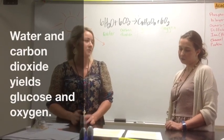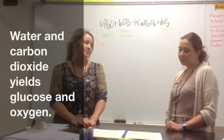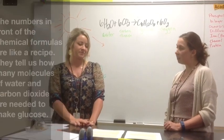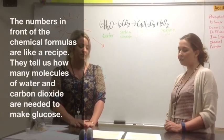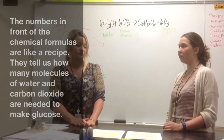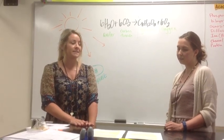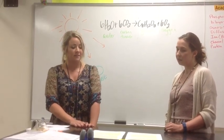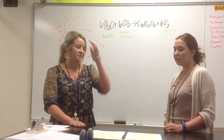What are the numbers in front of the chemical formulas? The numbers in the equation are like a recipe. They tell us how many of each molecule of water and carbon dioxide we need in order to make the glucose. So it takes 6 molecules of water and 6 molecules of carbon dioxide.